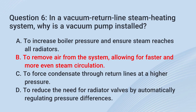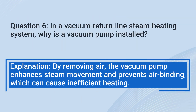The correct answer is B. To remove air from the system, allowing for faster and more even steam circulation. By removing air, the vacuum pump enhances steam movement and prevents air binding, which can cause inefficient heating.